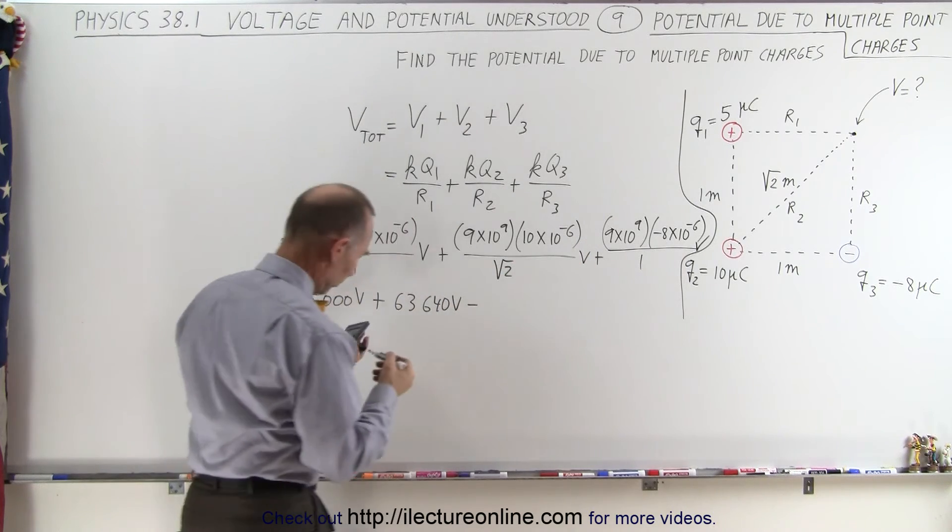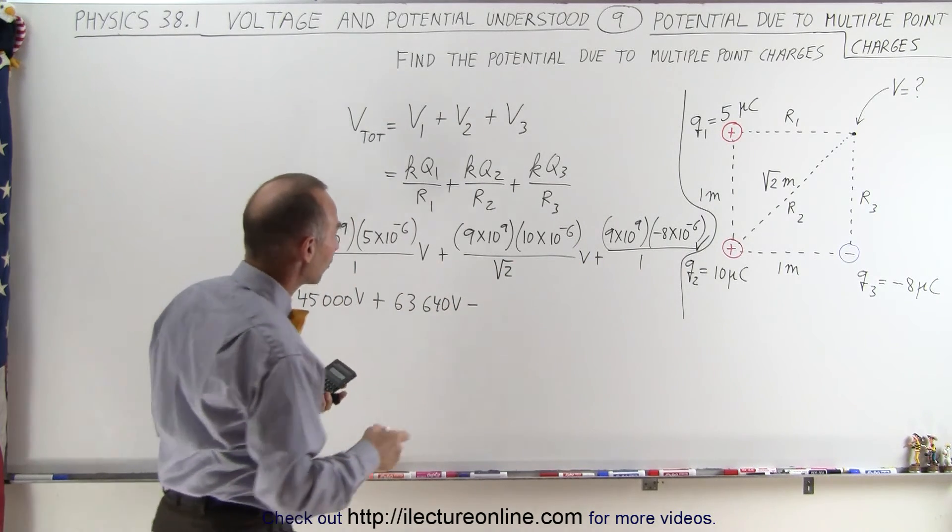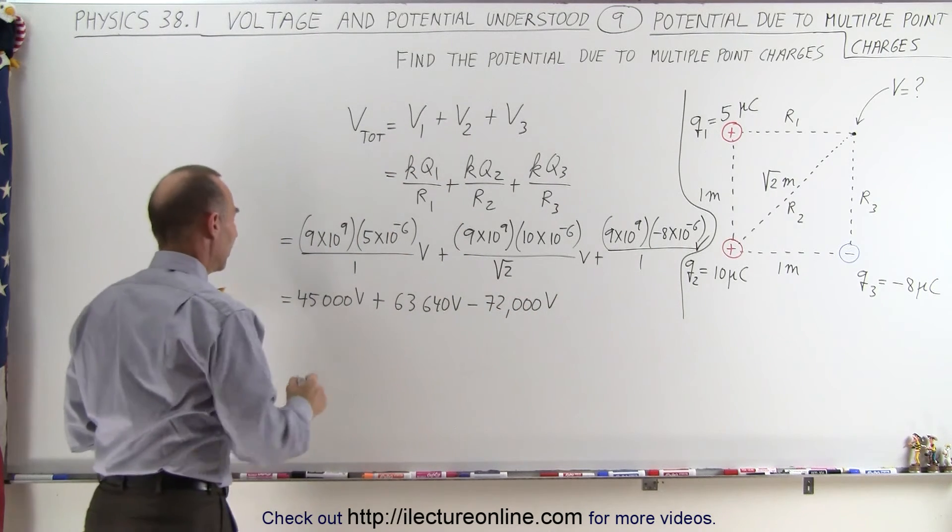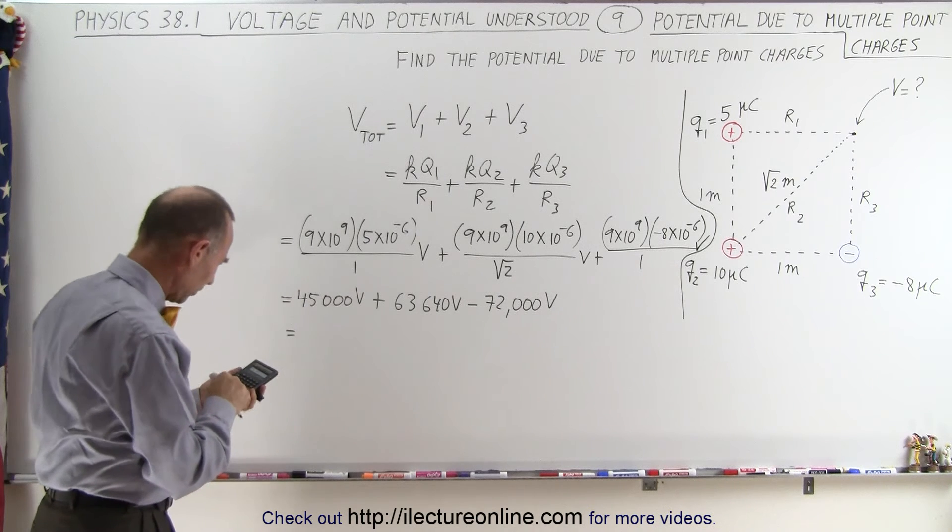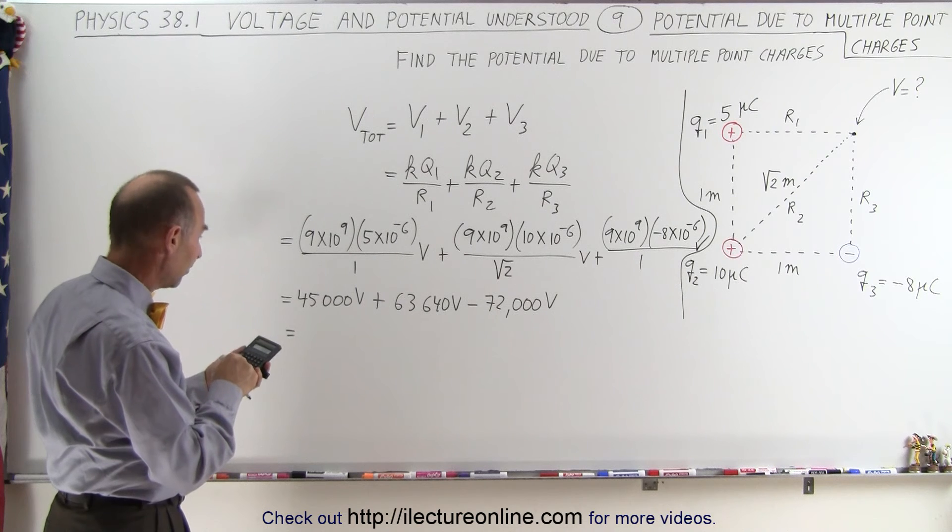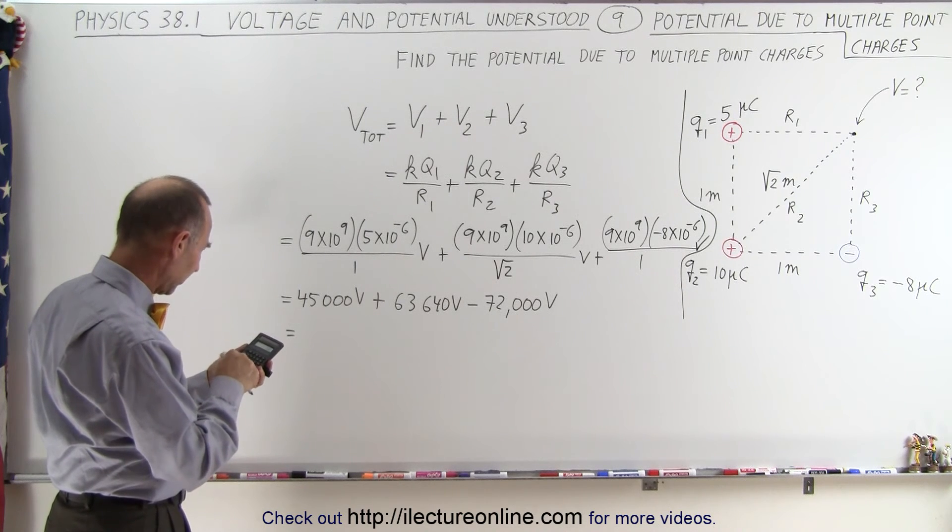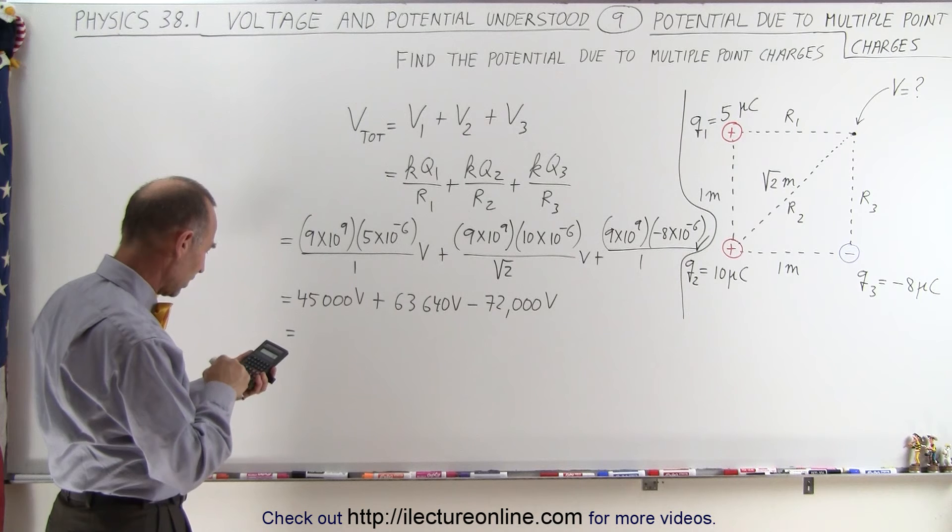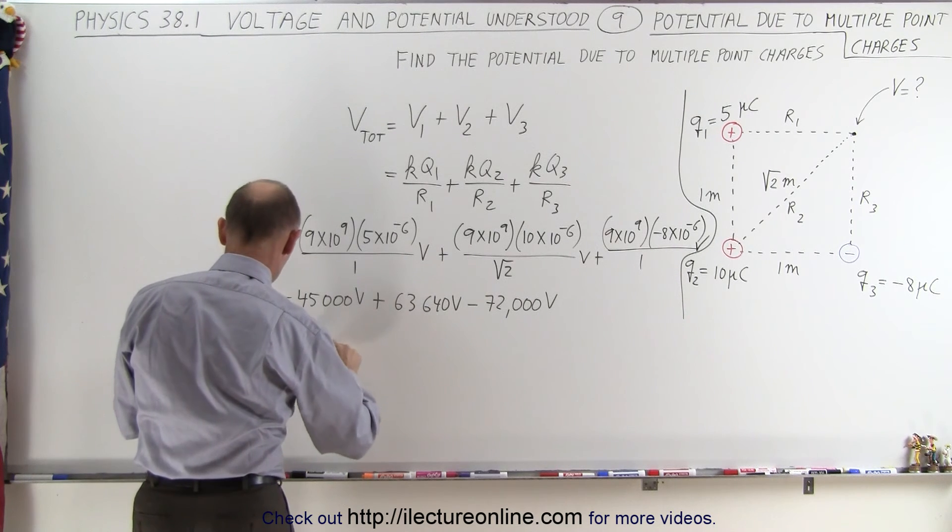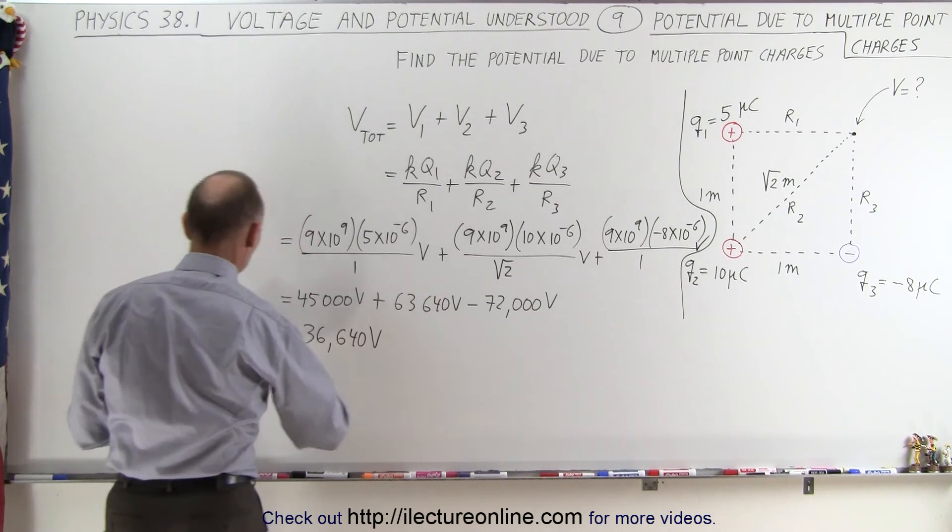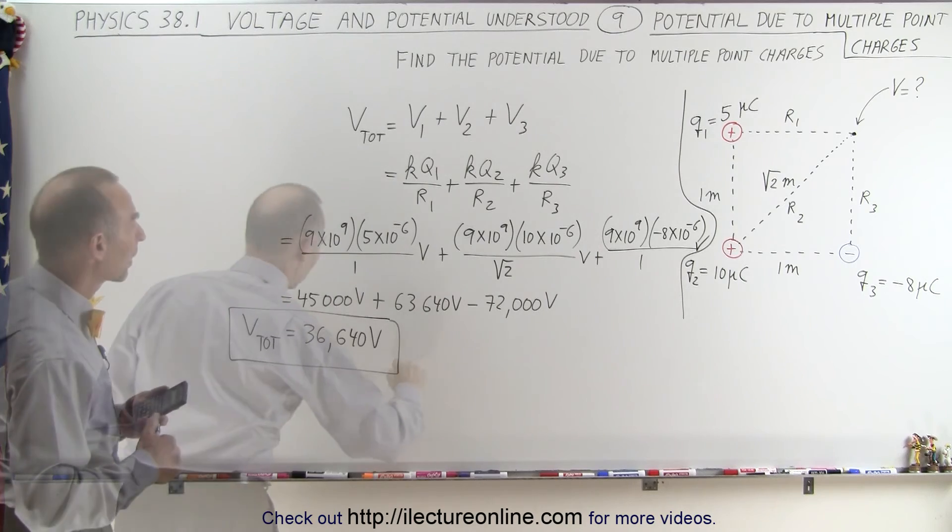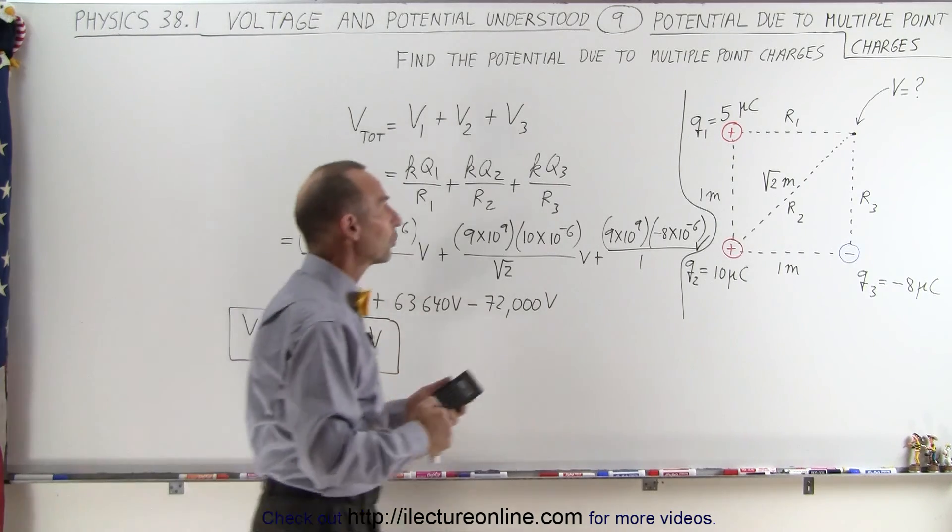And then minus, because the next one is going to be a negative voltage, which is going to be negative 72,000 volts. Then when we add these together, we get 45,000, plus 63,640, minus 72,000, which leaves us with 36,640 volts, which is the total voltage, or the total potential at that location.